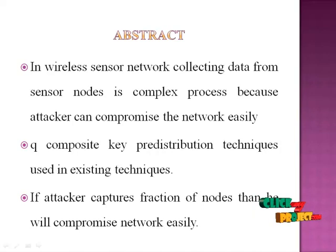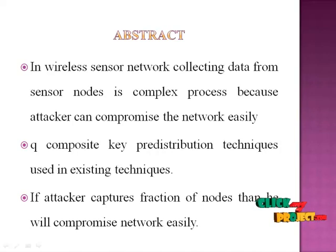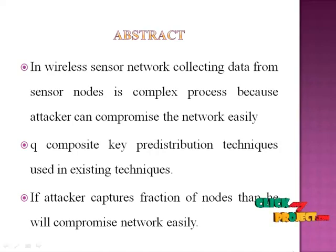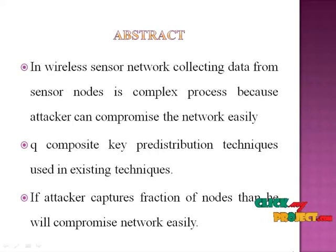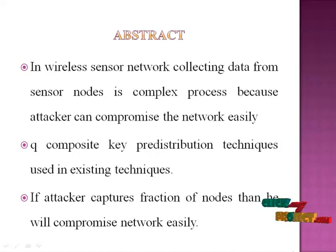the employment of mobile sinks for data collection elevates a new security challenge. In the basic probabilistic and Q-composite key pre-distribution schemes, an attacker can easily obtain a large number of keys by capturing a small fraction of nodes, and hence can gain control of the network by deploying a replicated mobile sink preloaded with some compromised keys.